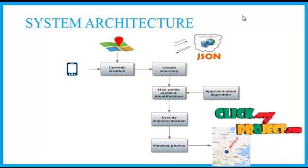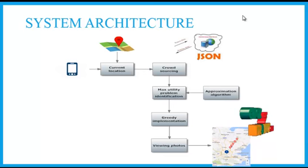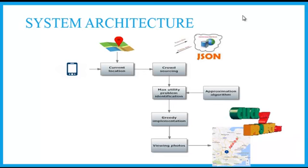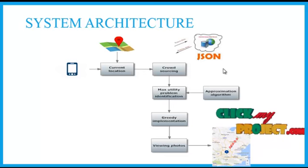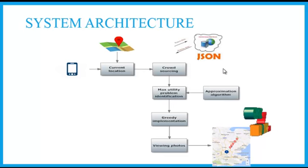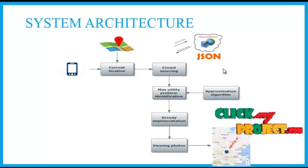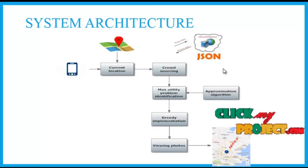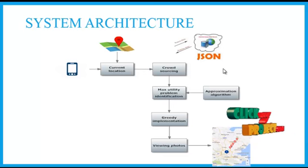The Google Play Service Library will produce the API console key for our current project. Next, we move on to cloud sensing, which is implemented using a JSON parser that fetches information from the server. We also identify 4 problems such as the max utility problem, for which we use an approximation algorithm to identify these utility problems.